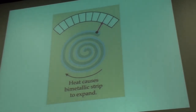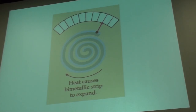Here's another one. In a thermostat, you can have a coiled bimetallic strip that has one side tend to become more or less coiled versus the other side as the temperature either rises or falls. That can trip a switch that can turn on or off your heater.